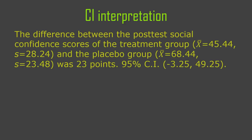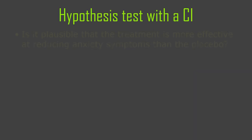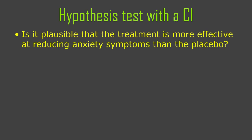So our interpretation would be something like: the difference between the scores — and I might report the individual sample means and standard deviations, or they've been reported elsewhere, but they need to go somewhere. I report the size of the thing we're looking at — 23 points — and then I report the confidence interval. So as a last question before I end this lecture: is it plausible that the treatment is more effective at reducing anxiety symptoms than the placebo is? You can answer that from the confidence interval, so see if you can answer that.